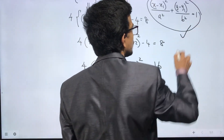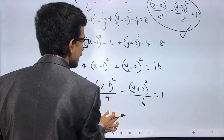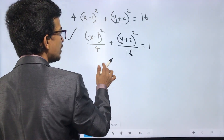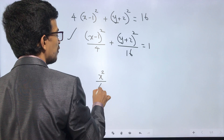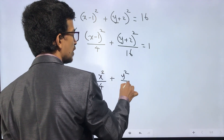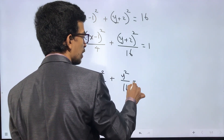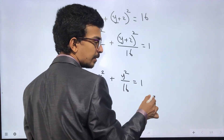Rearranging: (x minus 1) whole square times 4 plus (y plus 2) whole square equals 16. Dividing through: (x minus 1) whole square divided by 4, plus (y plus 2) whole square divided by 16, equals 1. This matches the standard form x squared by 4 plus y squared by 16 equals 1.